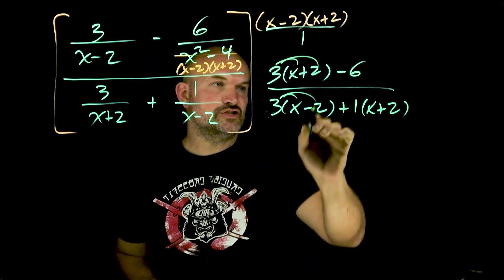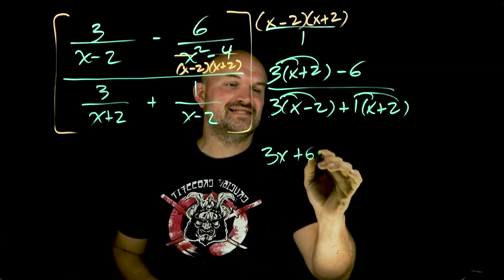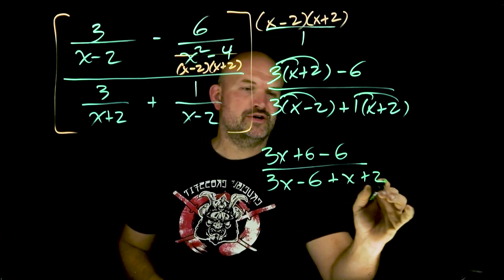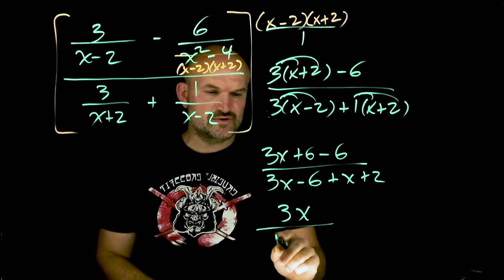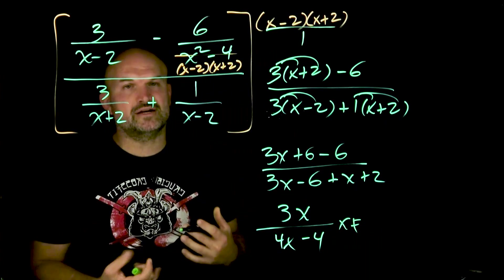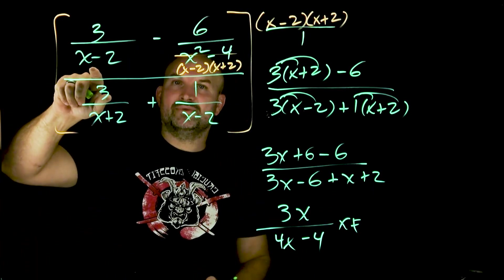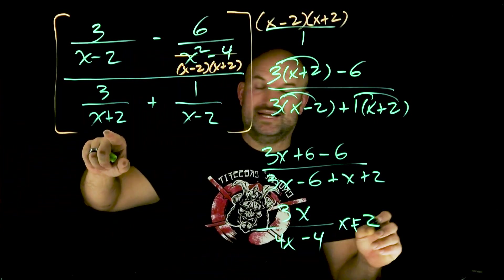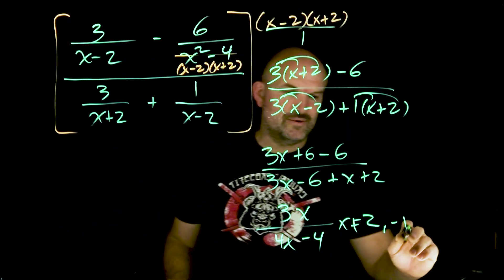Now we just need to apply the distributive property. I get 3x plus 6 minus 6 over 3x minus 6 plus x plus 2. Let's simplify: the 6 minus 6 goes to 0, so I'm dealing with 3x over 3x plus x — that's 4x. Negative 6 plus 2 is negative 4. So it's 3x over 4x minus 4. Now let's talk about excluded values: x cannot equal 2, x cannot equal negative 2. And if I take 4x minus 4 equal to 0, add 4, divide by 4 — x also cannot equal 1.